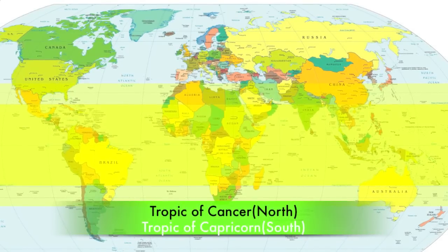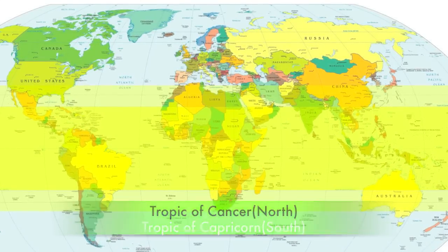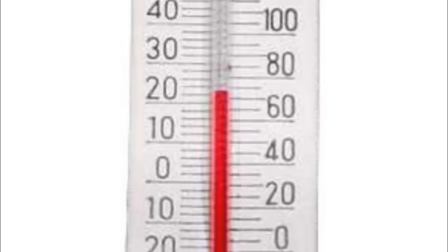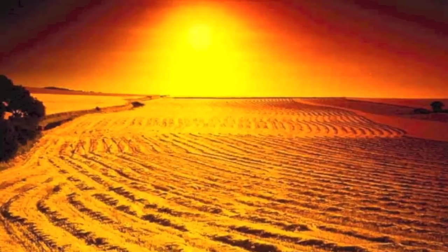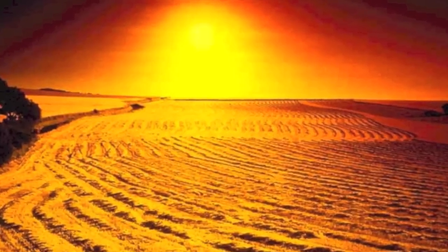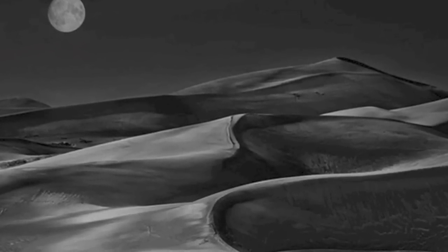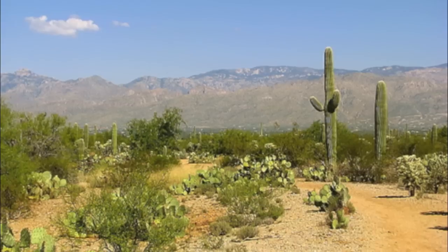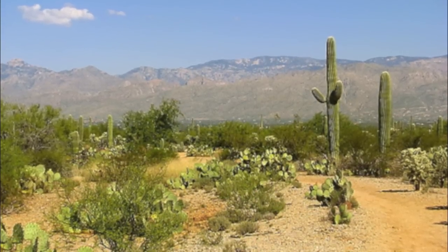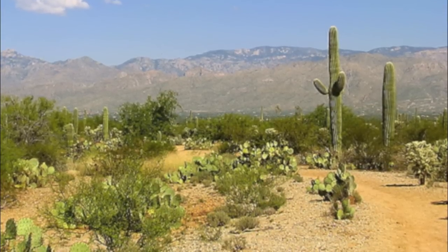Most hot and dry deserts are located near the Tropic of Cancer or the Tropic of Capricorn. Their temperatures range from 20 to 25 degrees Celsius. Summer temperatures in these deserts often reach 100 degrees Fahrenheit or higher. However, at night temperatures may drop to 45 degrees Fahrenheit or lower. The plants that do live there have special adaptations that let them survive the hot temperatures and store water when there's little or no rain.